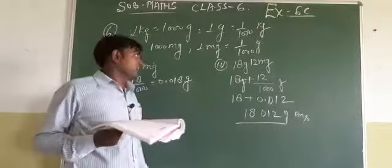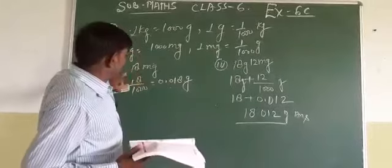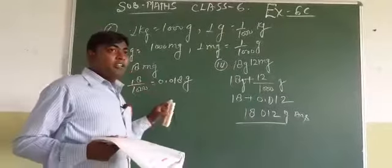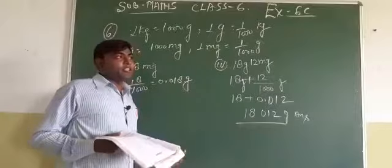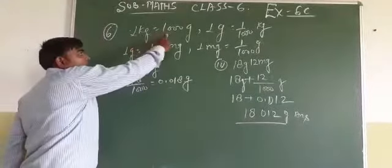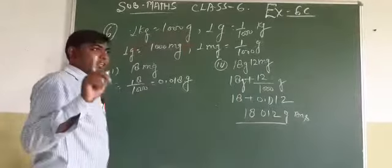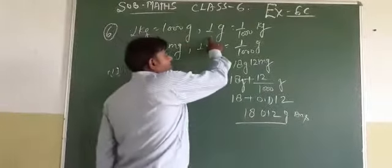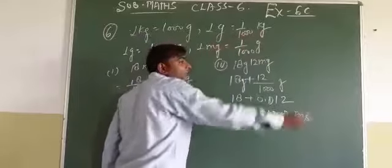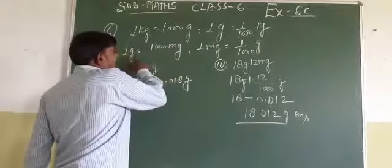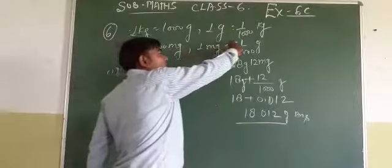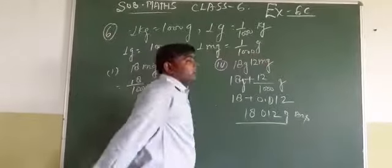The question is given in milligram - 18 milligram. So first let us understand the measurements. 1 kg equal to 1000 gram. So 1 gram equal to 1 upon 1000 kilogram. Similarly, 1 gram equal to 1000 milligram. So 1 milligram equal to 1 upon 1000 gram.